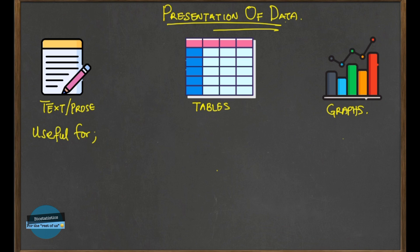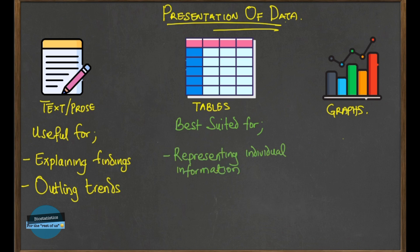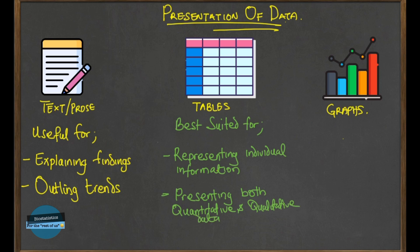The text format is actually useful when you want to explain findings or results of a study, and it's also useful sometimes when you want to explain trends. For tables, tables are simple tools used to represent individual information, and they can represent both quantitative and qualitative data. Tables are used when you want individual values to be compared to one another.